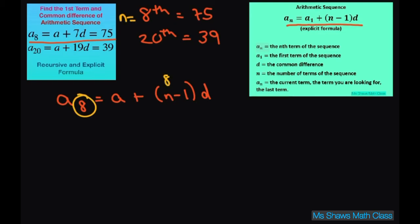So 8 minus 1 is 7. That's where you get the 7. This is always going to be 1 less than the term because of this minus 1. So basically we have A plus 7D equals 75. And we have A plus 19D equals 39.